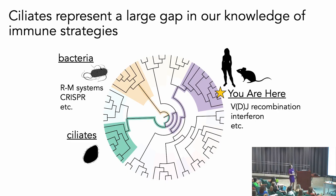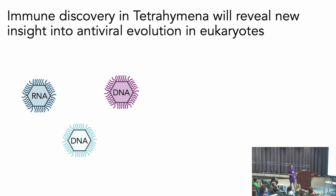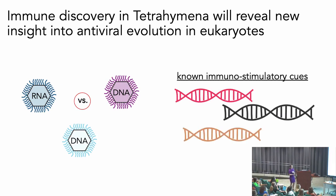We've made some really awesome discoveries in the last decade in bacteria — like restriction modification, CRISPR, et cetera — and those are very different from how we as humans defend ourselves. So I'm really motivated to find some other differences here. I do have some potential viruses in lab already, and I'll hopefully identify more. The more the merrier, because then I can start doing really interesting comparative experiments between, say, an RNA virus and a giant DNA virus.